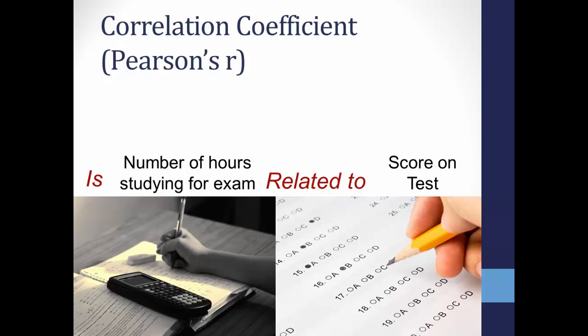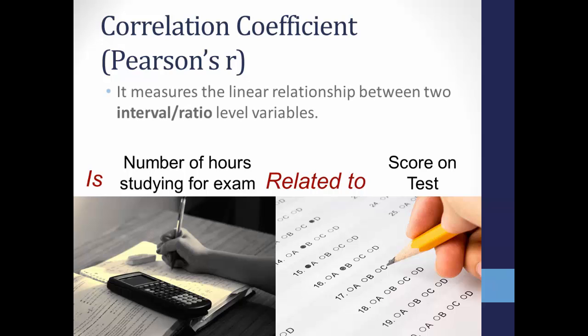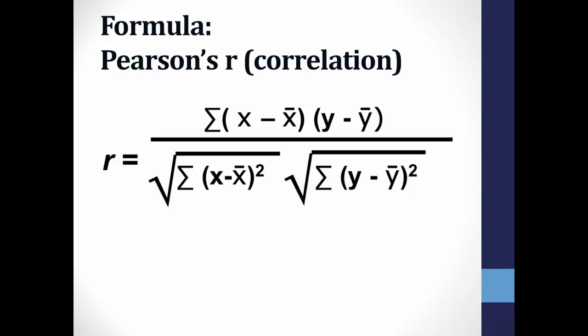To determine if a relationship exists between hours of study and exam score, you would calculate Pearson's R because it measures the linear relationship between two continuous-level variables — interval or ratio-level data. That takes us to the formula for Pearson's R. Notice that you really only need to know the scores for each group and the means for each group. Degrees of freedom, which you need to look up the critical R value on a table, is the number of observations minus two.